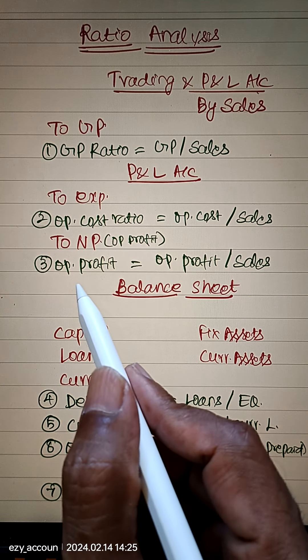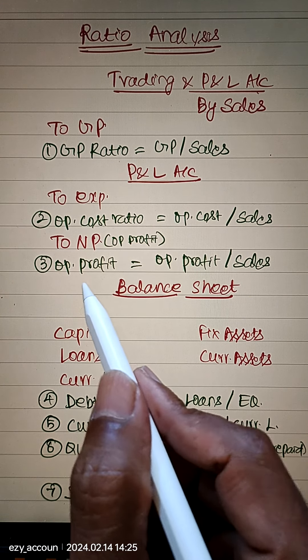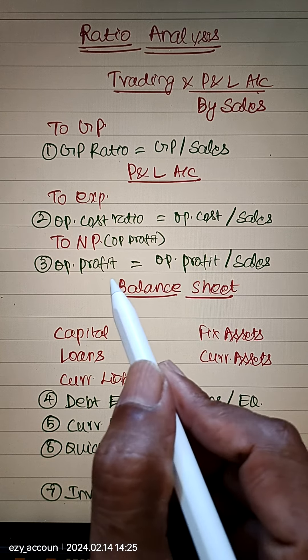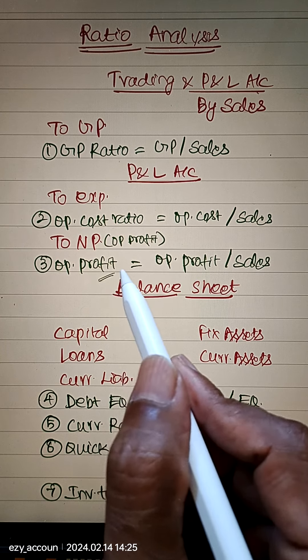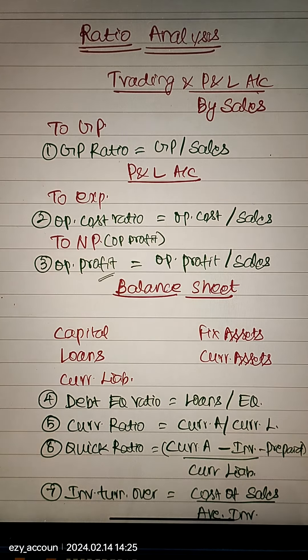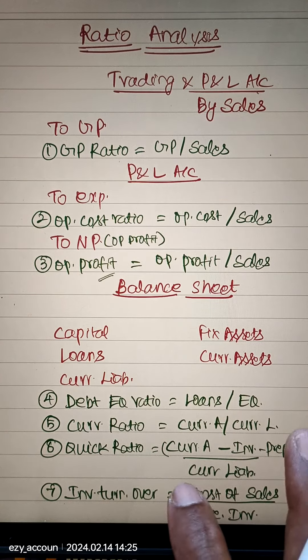Operating Profit Ratio is equal to Operating Profit divided by Sales. Operating Profit is calculated after Gross Profit. Then we move to the Balance Sheet ratios.